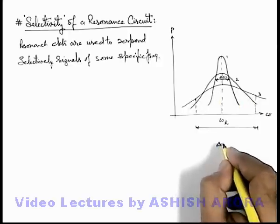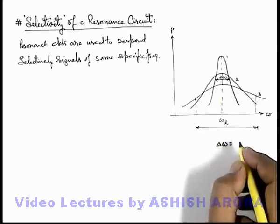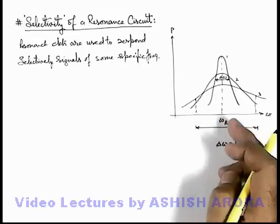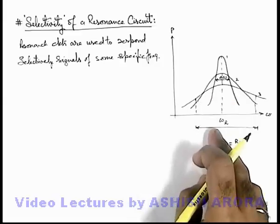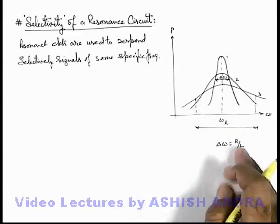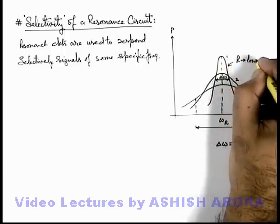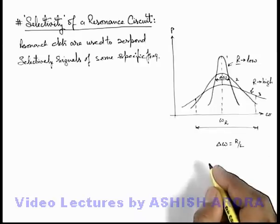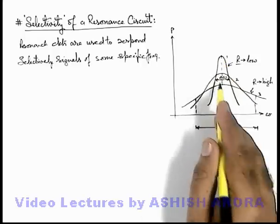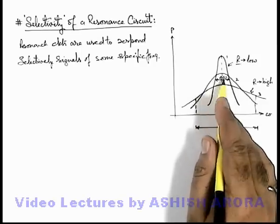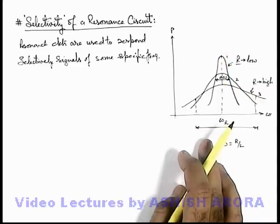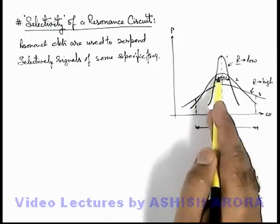We know the bandwidth of a circuit is given by R/L. In all 3 circuits the ratio R/L is continuously changing, but the resonating frequency is the same. So if we keep the value of L constant, for circuit 1 we can say the value of R is low because the bandwidth is low, and for circuit 3 where bandwidth is large, the value of R is high. This is the basic difference in the 3 circuits.